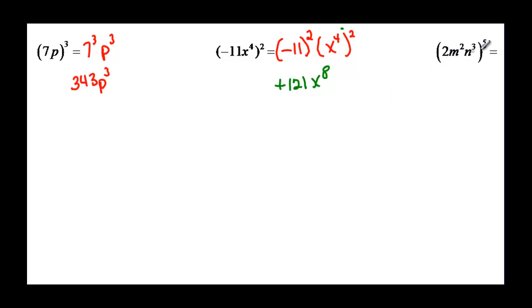And then finally we have everything inside being raised to the 5th. So again the number gets raised, so 2 to the 5th. m squared is going to be raised to the 5th, and so is n cubed. Now we come back through and say okay, 2 to the 5th happens to be 32. m squared raised to the 5th, now I have to use that power raised to a power rule. That said multiply. 2 times 5 will give me m to the 10. And then this will be n to the 3 times 5 or 15.